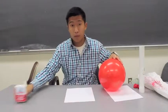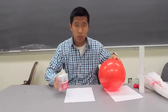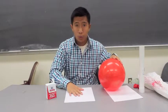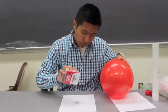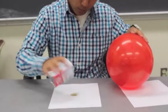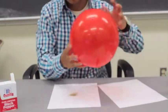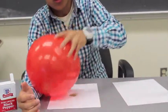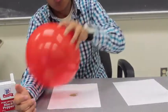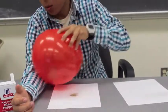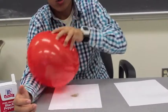After that, you can have your pepper, maybe half a teaspoon of pepper, sprinkle it down on a white piece of paper. And then you can start rubbing the balloon on your shirt or your hair, where it creates static electricity.